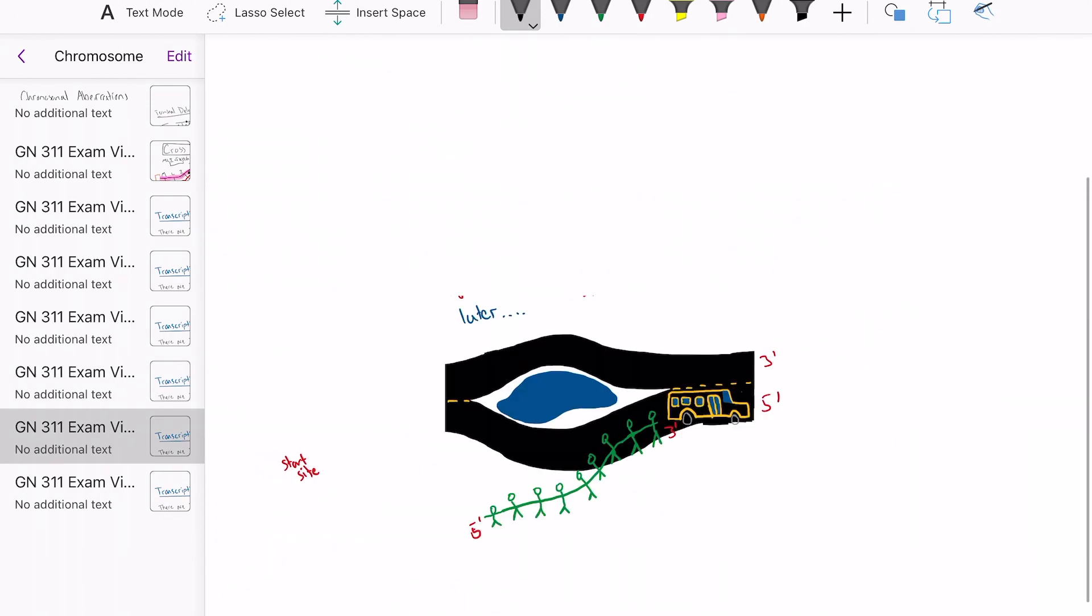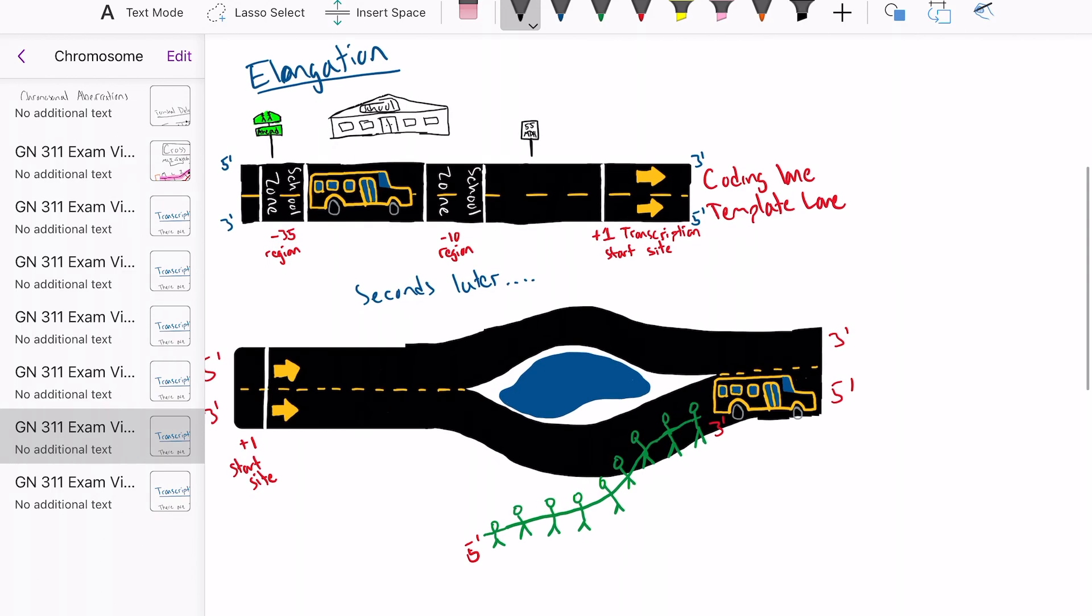Moving on to the second step of transcription, we have elongation. The bus is now moving down the road with all the children loaded up. As the bus or RNA polymerase continues down the road, it begins to drop children off at their respective houses. This is the RNA chain being synthesized.